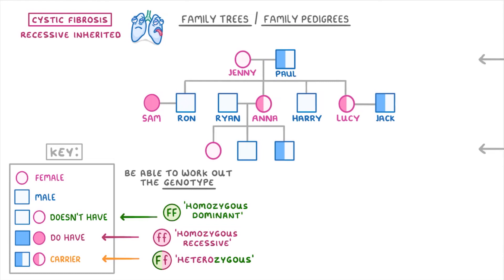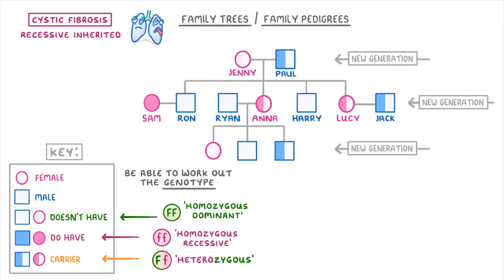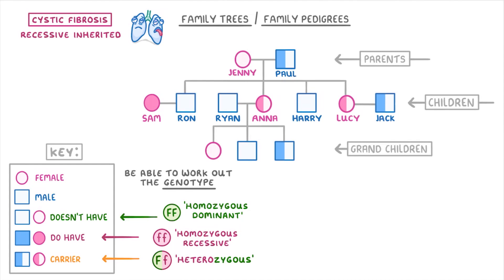For the tree itself, each new row is a new generation. So we could think of this top row as the parents, the second row as their children, and the bottom row as grandchildren. If two people are connected directly with a horizontal line, like these four pairs, it just means they're a couple. So Sam, Ryan, and Jack are all unrelated individuals from different families, but they're shown on this family tree because they're partners of members of this main family.